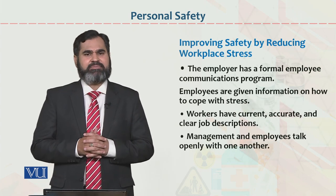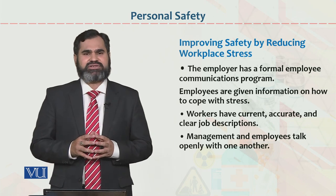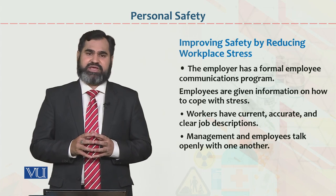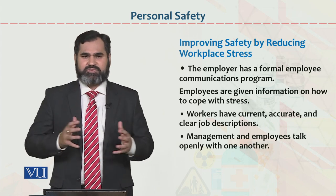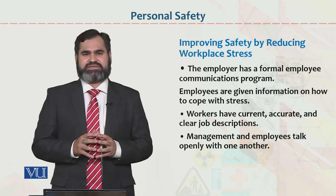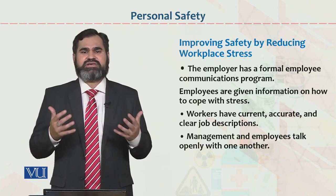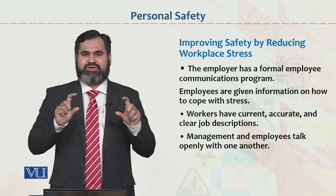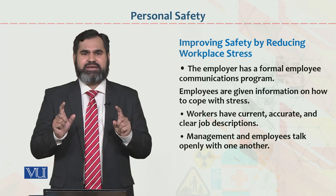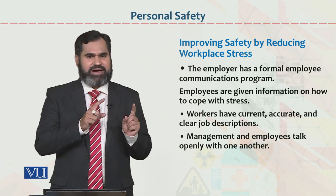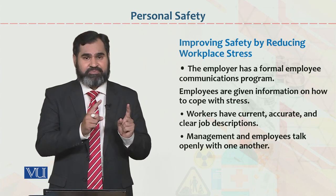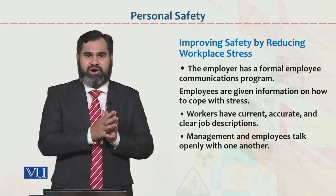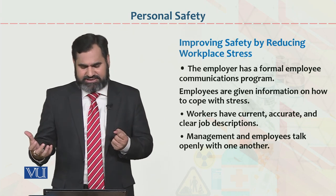Looking at this from the employer's perspective, the first bullet point states: the employer has a formal employee communication program. Not all employees can have direct access to the employer, but managers, CEOs, chief executive officers, general managers, and the top tier of the organization should have access to top management — the owner of the organization — so that in case of any problem, they can contact the organizational owner, get a decision, and communicate it to the rest of the staff.